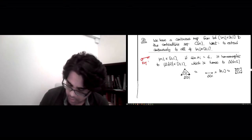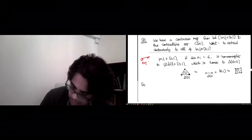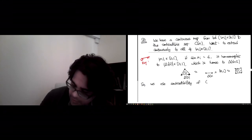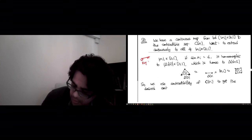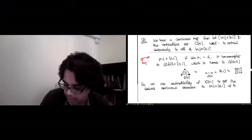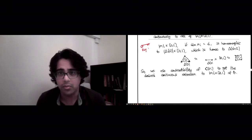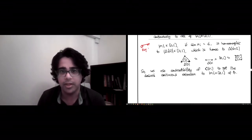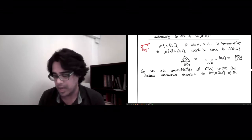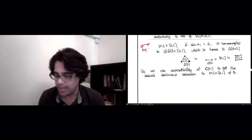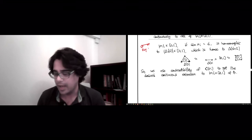So to end the argument, we use the contractibility of C(sigma_i) to get the desired continuous extension to sigma_i cross [0,1] of theta. So we've taken everything we knew about the values of sigma on the smaller set, S_{i-1} cross [0,1], and we added a single simplex to it, and it turns out that because simplex cross [0,1] is just a higher simplex, and C(sigma_i) is contractible, we can get the extension that we need. So now we've defined theta on S_i, if we had it on S_{i-1}, and so by induction you can work all the way up to n. And that's the end of the proof.